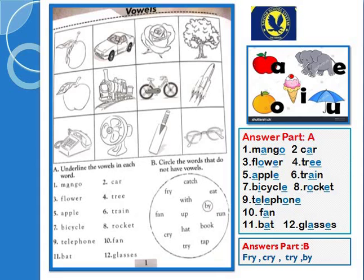Number 8, rocket. Number 9 pe telephone hai baccho — isme agar aap dekhen toh E, T, E, L, E, P, H, O, N, E. Toh isme pehle E ko underline karna hai, phir L chhod ke next E, P, H chhod ke O, aur N chhod ke E. Toh telephone mein how many vowels? 4 vowels. Next, fan — A. 11 pe bat — A. Number 12, glasses — A and E.